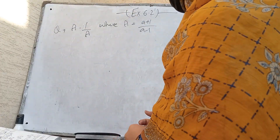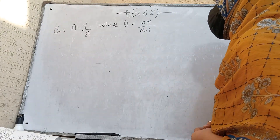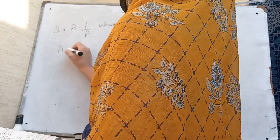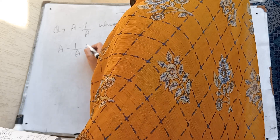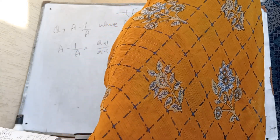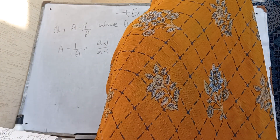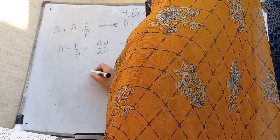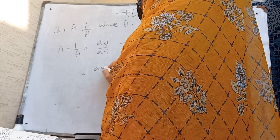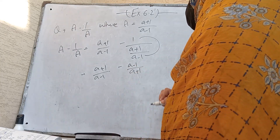Question 6 is: find a minus 1 over a, where a is equal to (a plus 1) over (a minus 1). So we have a minus 1 over a, and substituting the value of a, which is (a plus 1)/(a minus 1), we get (a plus 1)/(a minus 1) minus 1 over (a plus 1)/(a minus 1). Then a minus 1 shifts to upward, giving a minus 1 over a plus 1.